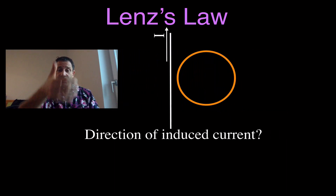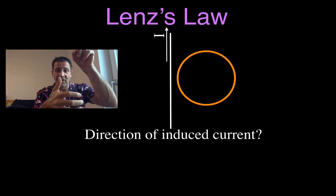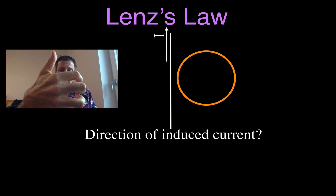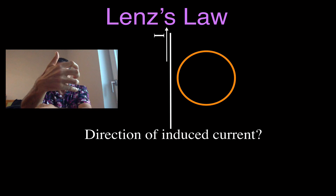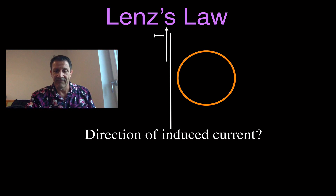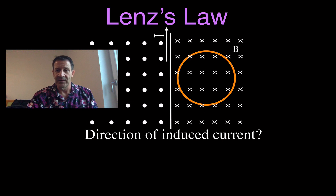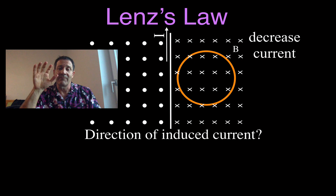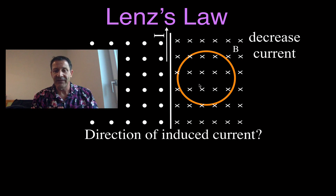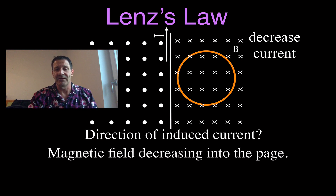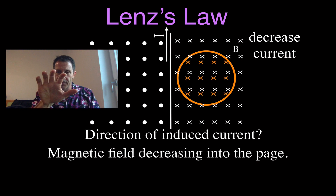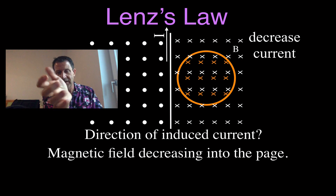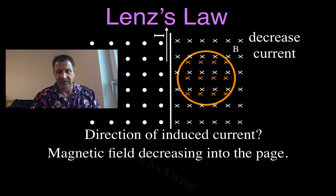Another example with a wire — this time the wire is pointing up. Point my thumb in the direction of the current, reach around the wire: on the right-hand side the magnetic field goes into the page, on the left-hand side the magnetic field is out of the page. This time the current is decreasing, so inside this coil there's going to be less magnetic field into the page. Therefore, the coil has to produce more magnetic field into the page to counteract that change. Point my fingers inside the coil into the page — my thumb points in the clockwise direction. The induced current is clockwise.